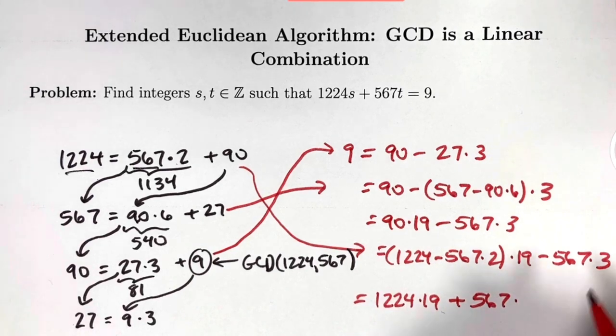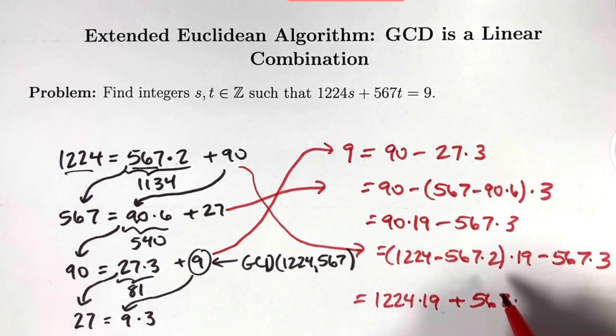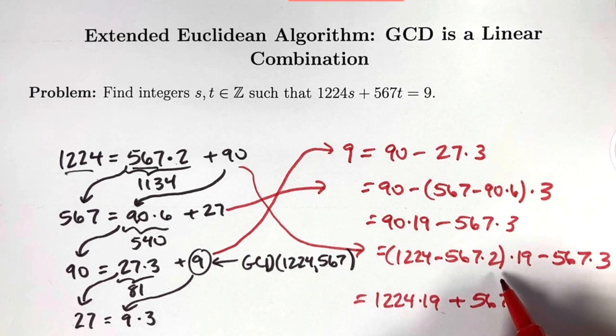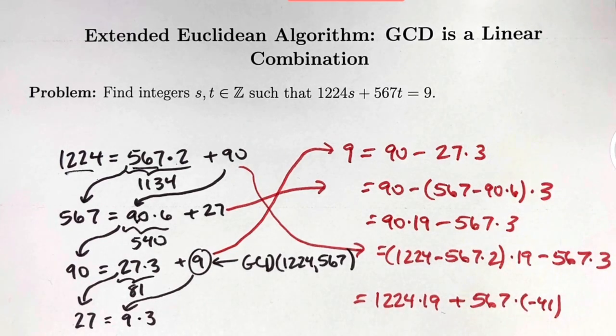Plus 567 times what? What is t? Look at the coefficient we get. You have a minus 2 times 19 is minus 38. You also have a minus 3. That's going to be minus 41.